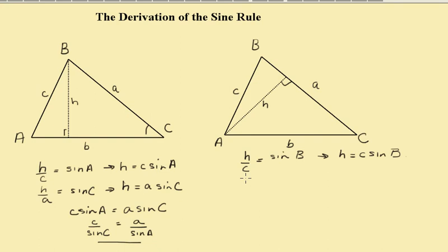Then we have H over B in this triangle here equals the sine of C, which means that H equals B sine C.